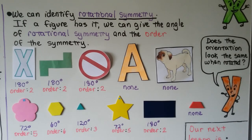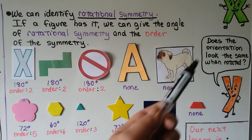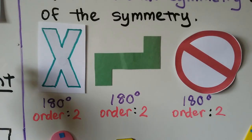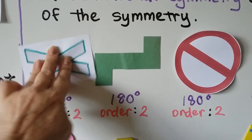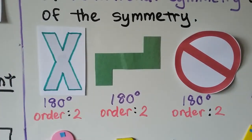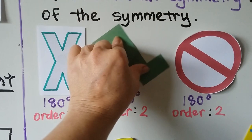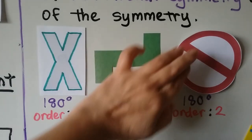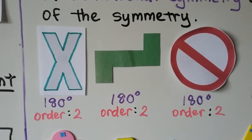We can identify rotational symmetry — if a figure has it, we can give the angle of rotational symmetry and the order. We look for whether the orientation looks the same when it's rotated. For this X, I can flip top to bottom — that's a 180-degree rotation, and we have an order of 2. For this shape, I can flip it around 180 degrees and it'll have the same orientation with an order of 2.